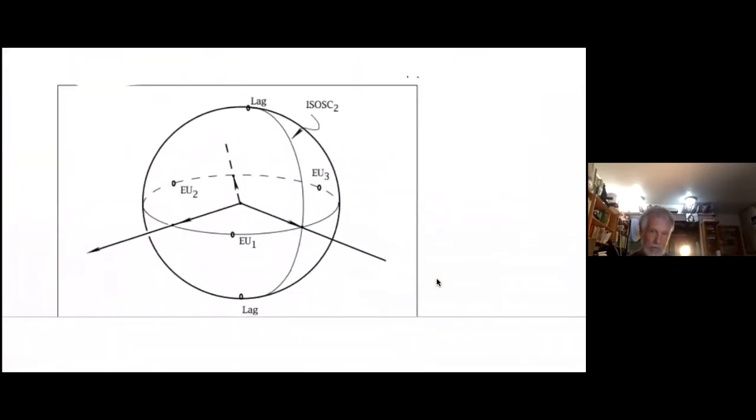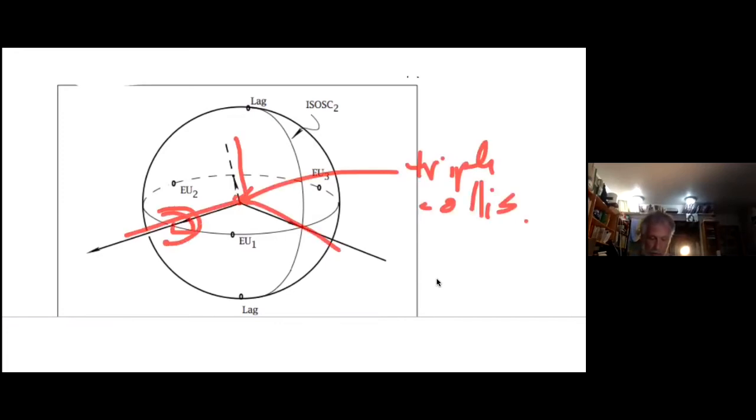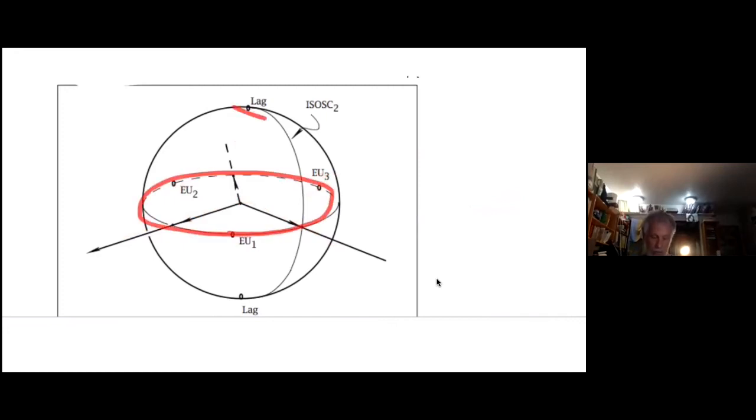And the critical points of that function are exactly the central configurations. So Morse theory starts being relevant. This is the picture of that normalized potential for the three-body problem. This is a binary collision. This funny function has a pole there. These saddle points are the Euler points. There's three of them. And there's the Lagrange points. So the critical points of this function on CP1, which is S2, are the central configurations.